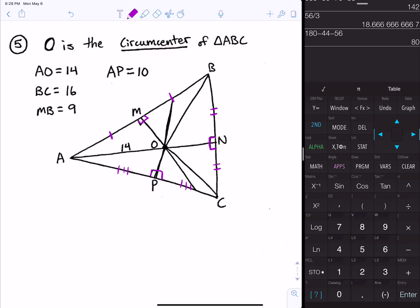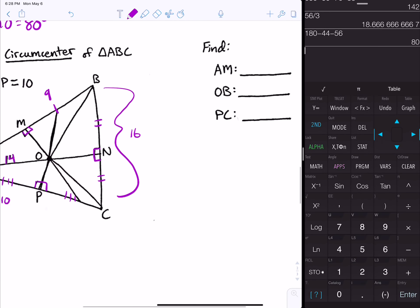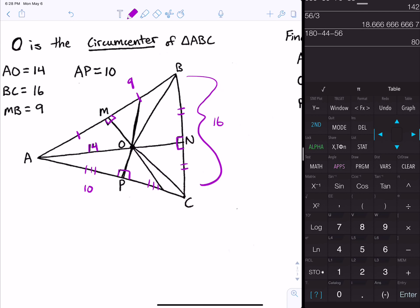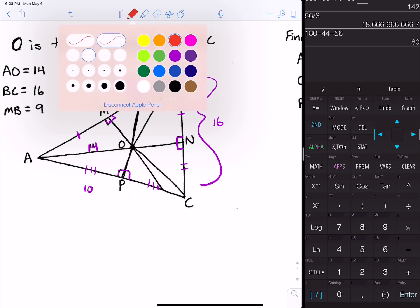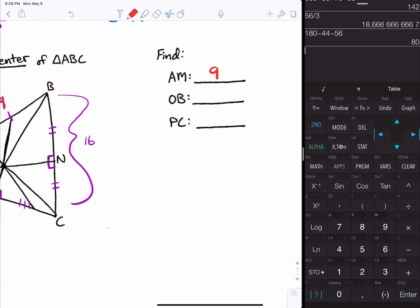AO is labeled already, that's 14. BC is 16, MB is 9, and AP is 10. So AM would just also equal 9 because that is the same thing as MB. So that would just be 9.